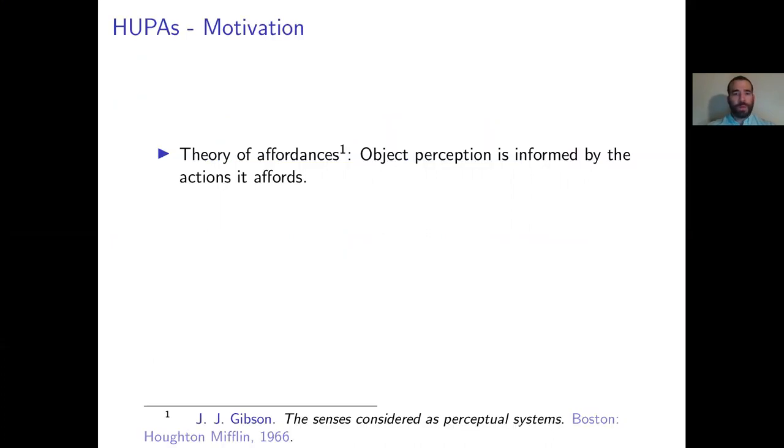Gibson's Theory of Affordances proposes that we perceive objects not just by their visual features, but also by the motor actions that they afford.